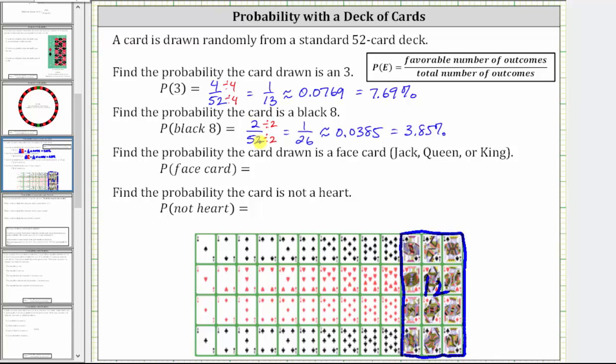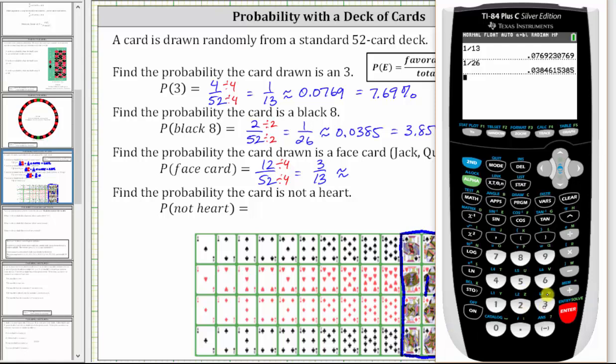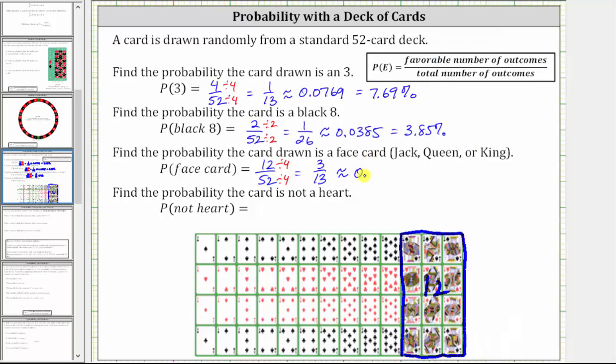Therefore, the probability is 12/52, or 12 divided by 52. Simplifying by dividing both by 4 gives us 3/13. Let's show the decimal and percentage: 3 divided by 13 to four decimal places is 0.2308, which gives us 23.08%.